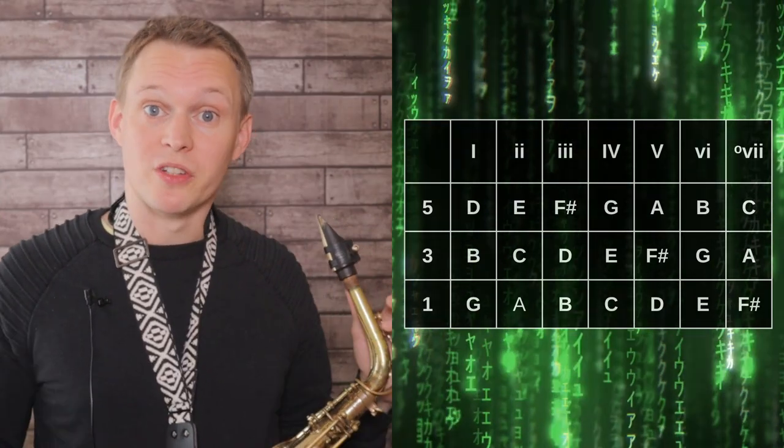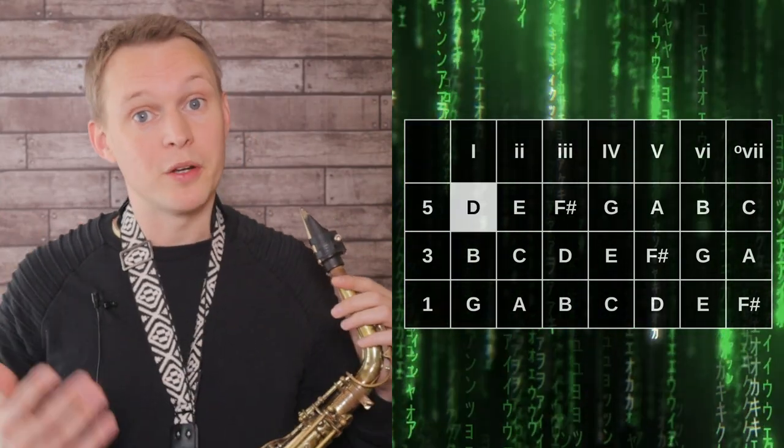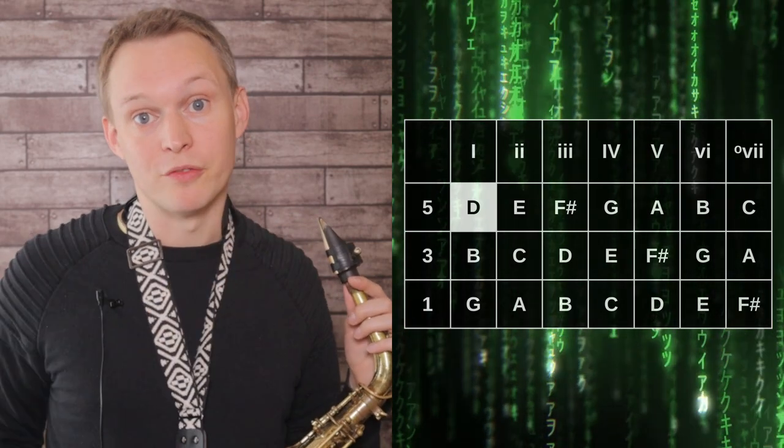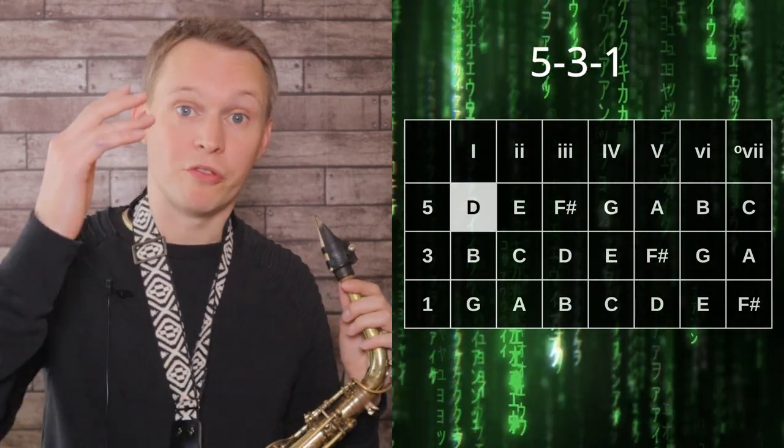So of course after the permutation starting on the three, we've got the final two which is starting on the five, so we've got five, one, three, and then we've got five, three, one. All right, so here's that workout going through all six different permutations.